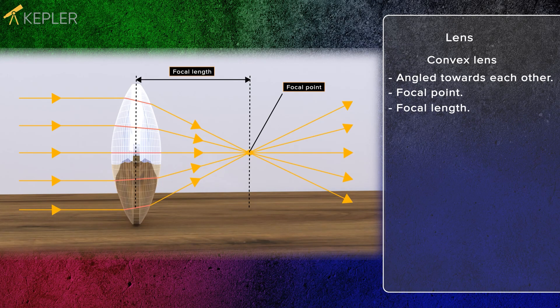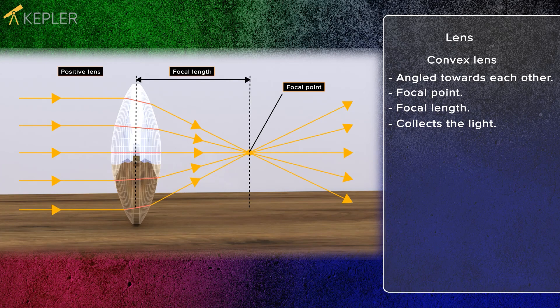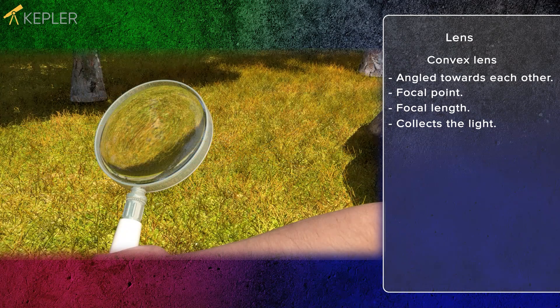A convex lens is called a collecting lens because it collects the light rays after they hit the lens. This is a positive lens. A magnifying glass is a convex lens.